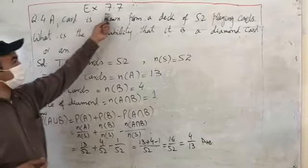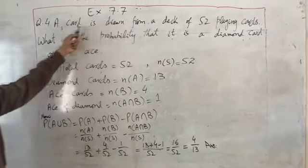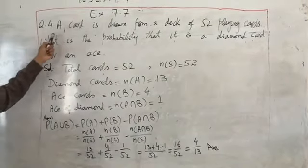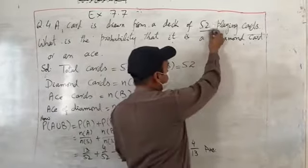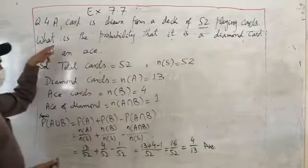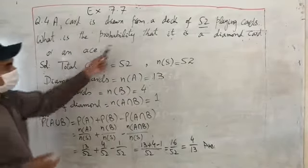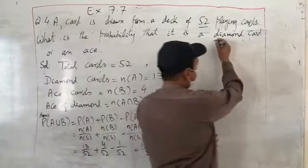Assalamualaikum. Today's lesson is Relation to exercise stamp on salmon. Question number 4 statement is: A card is drawn from a deck of 52 playing cards. What is the probability that it is a diamond card or an ace?